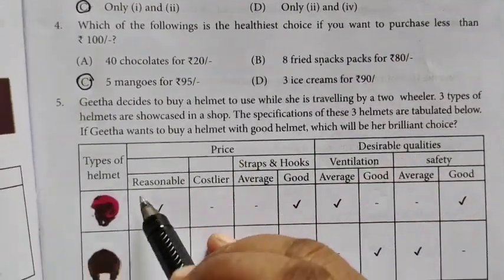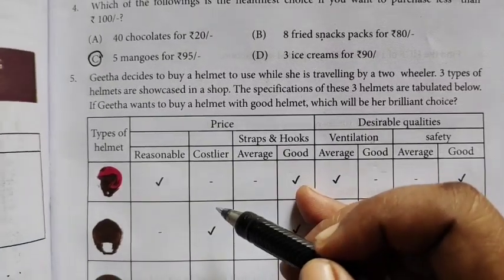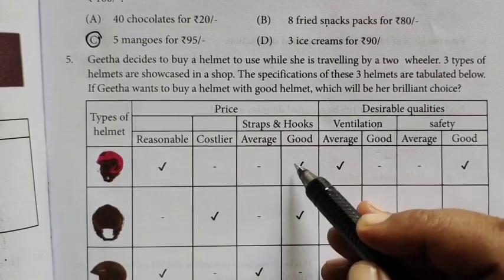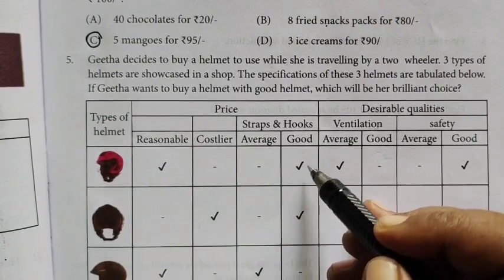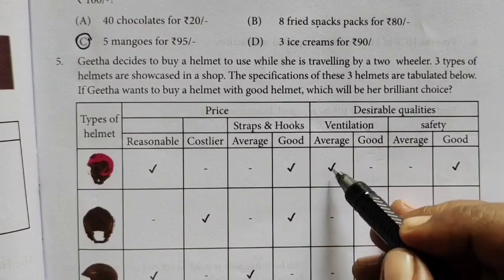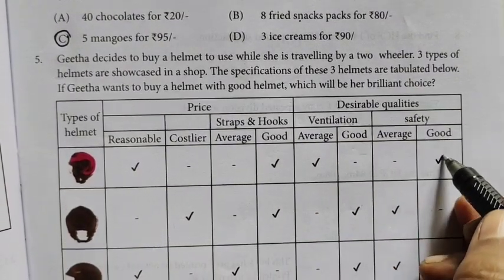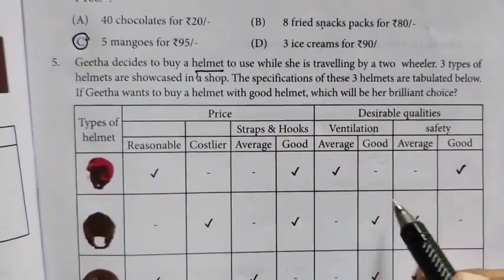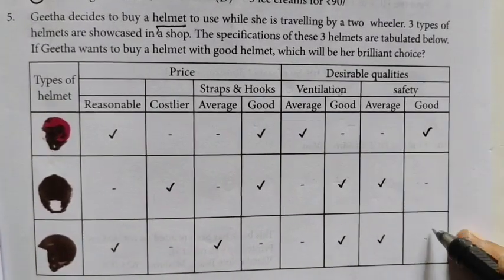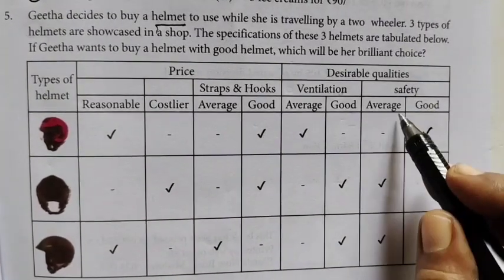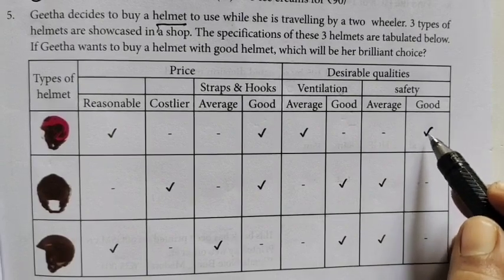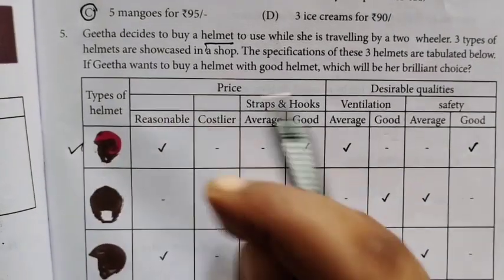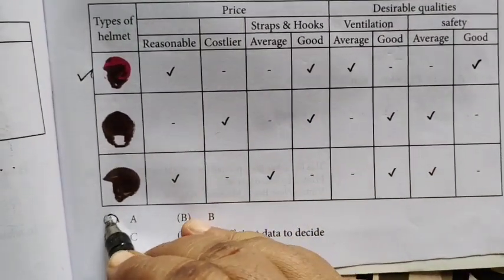Then Geetha decides to buy a helmet. Helmet is 3 types. First helmet has reasonable price, strap is good, ventilation is average. This is the correct option, A is the correct option.